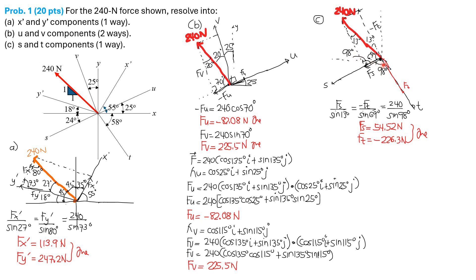Then 180 minus 69 degrees minus 13 degrees equals 98 degrees. Using this triangle with sine law: FS over sine 30 degrees equals negative FT over sine 69 degrees equals 240 Newtons over sine 98 degrees. Solving, FS equals 54.52 Newtons and FT equals negative 226.3 Newtons. That's it for this problem.